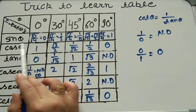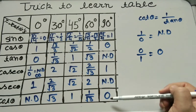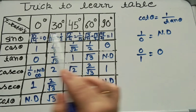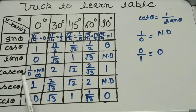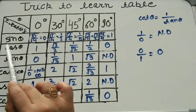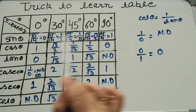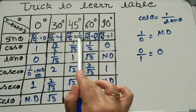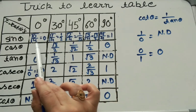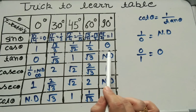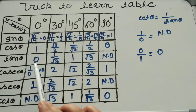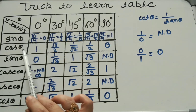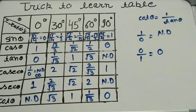So if you have solved sin theta, you can find all other ratios from it. Reciprocal of sin theta gives cosecant theta. To get cos theta, shift the ratios in reverse. For tan theta, divide sin theta by cos theta. Reciprocal of tan theta gives cot theta. And cos theta is the reciprocal of secant theta.